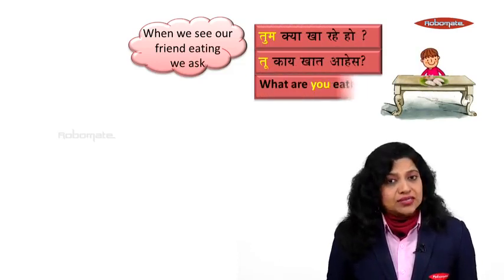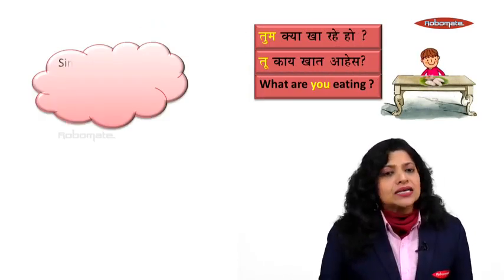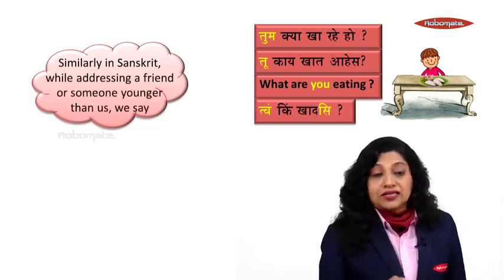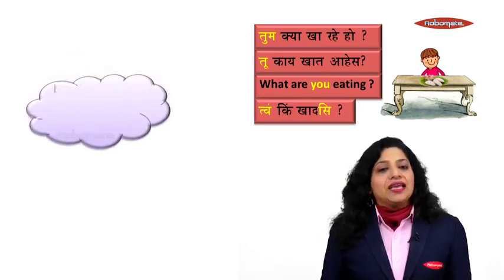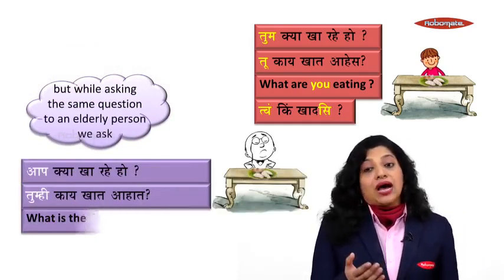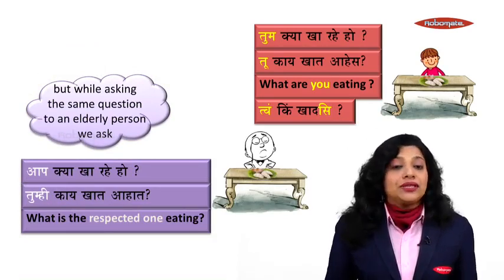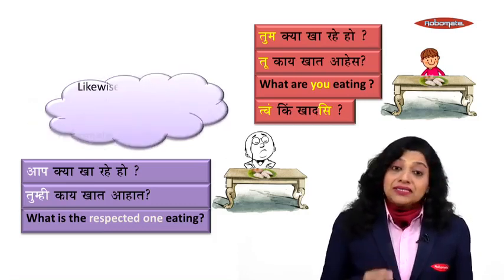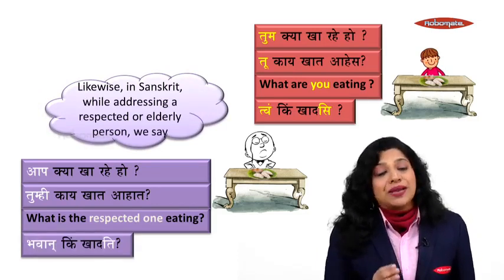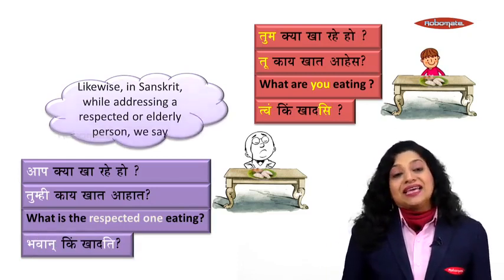When we see our friend eating, we would ask in Hindi: 'tum kya kha rahe ho' or 'tu kai khat ahes' — meaning 'what are you eating?' In Sanskrit, we would address a friend or someone younger as 'twam kim khadasi.' But if addressing someone elderly, we would say 'aap kya kha rahe ho' — and in Sanskrit that becomes 'bhavan kim khadati.'